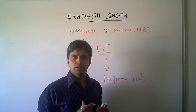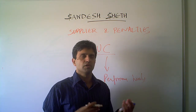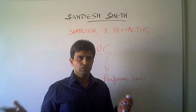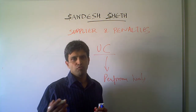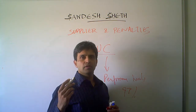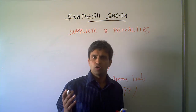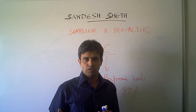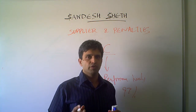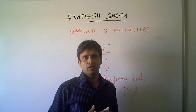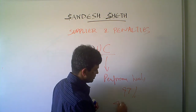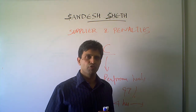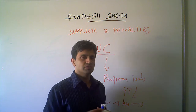Let's assume that we have a supplier who is providing computer services — replacement of hardware, printers, keyboards, hard disks, etc. — at the various locations of the organization. We have a 97% target for resolving incidents, such that if we raise an incident for a customer type B, we want it resolved within 4 hours of assigning it to the supplier. At the end of every week or month, we analyze what the performance level has been.